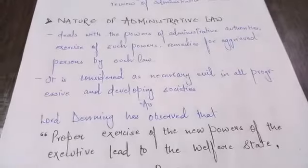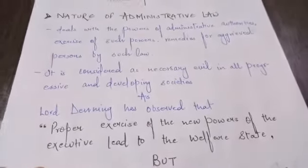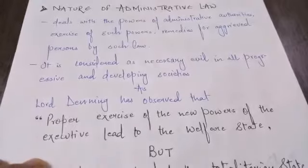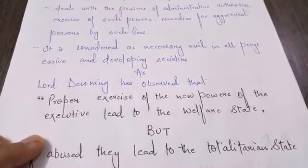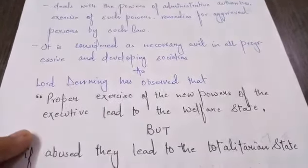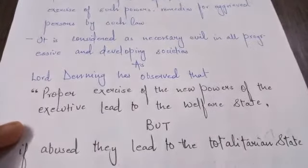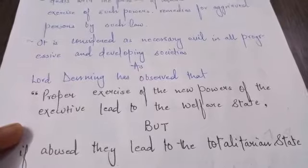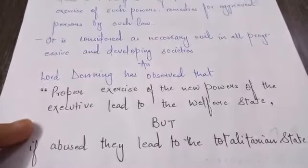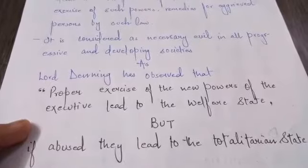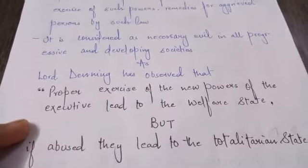Lord Denning observed that proper exercise of the new powers of the executive leads to the welfare state, but if abused, they lead to the totalitarian state. Hence, administrative law is considered a necessary evil in developing and progressive societies.